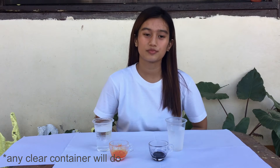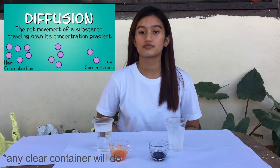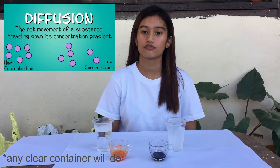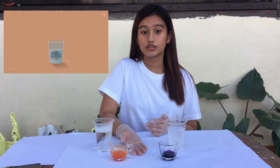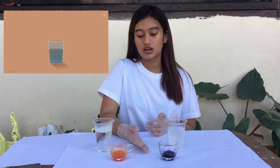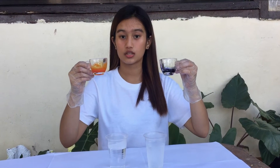Since all the materials are presented, I am going to discuss first what diffusion is. Diffusion is the movement of molecules from an area of high concentration to an area of low concentration. To demonstrate how that works, we are going to drop a drop of food coloring into a container of hot water and cold water at the same time — violet food coloring to demonstrate the cold water, and yellow food coloring to demonstrate the hot water.